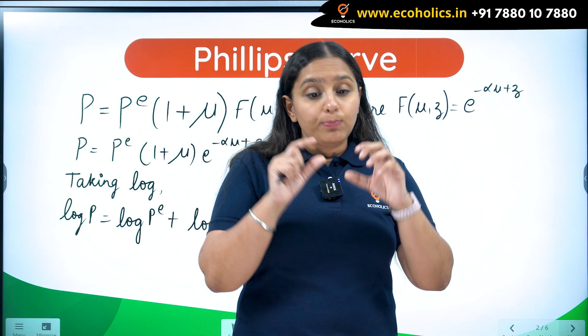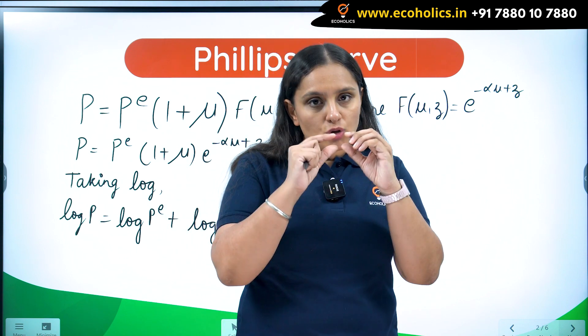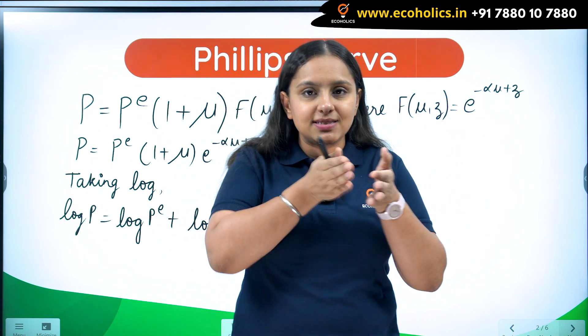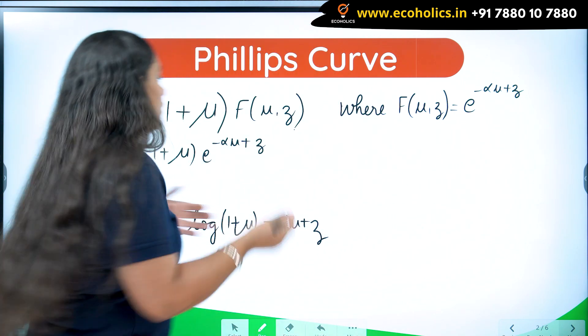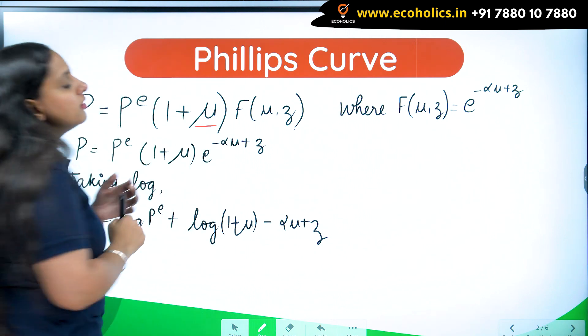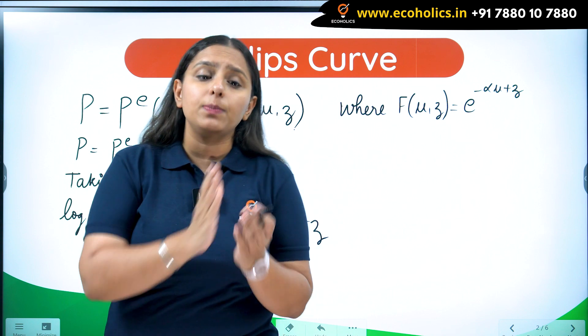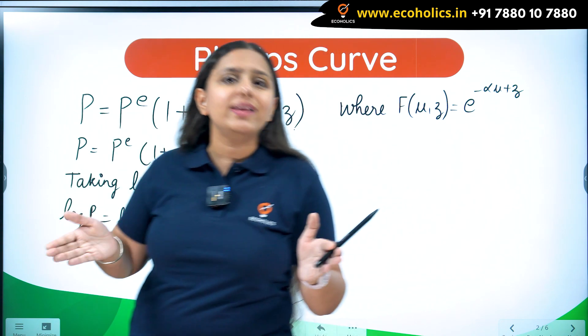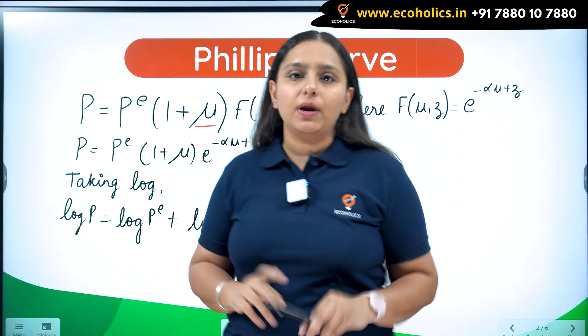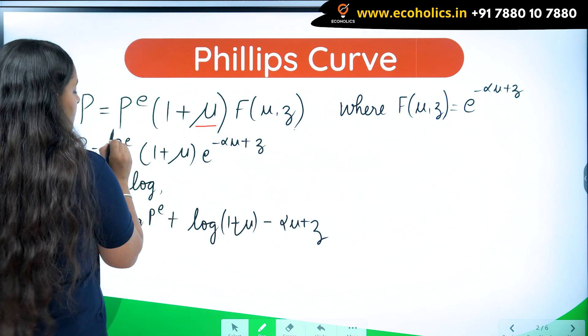Whenever they are setting prices, there is always a markup. Markup means that extra margin they are keeping. This markup is represented here by mu. Whatever is their cost, they always keep a markup over that cost to set their prices.